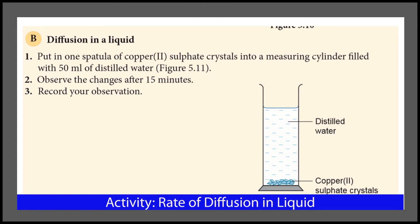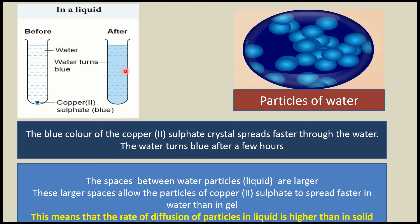Next, let's look at the diffusion in a liquid. Put one spatula of copper-2-sulfate crystal into a measuring cylinder filled with 50 ml of distilled water. Observe the changes after 15 minutes and record your observations. The blue colour of the copper-2-sulfate crystal spread faster through the water. The water turns blue after a few hours. The spaces between the water particles are larger.